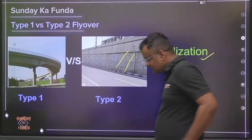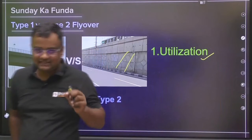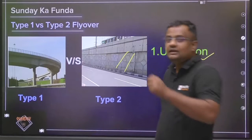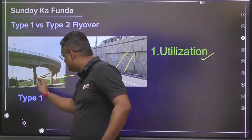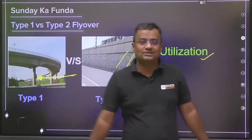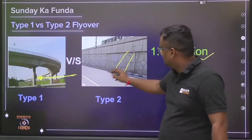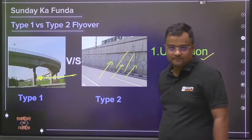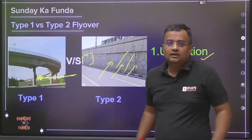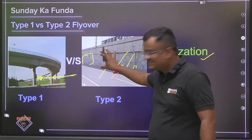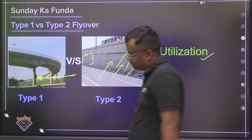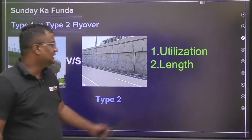The first factor is utilization. Irrespective of site conditions like soil bearing capacity, and irrespective of economy, if you want a clear passage — for example, if traffic is moving in a perpendicular direction and a road is coming perpendicular — then you have to construct type one because the road cannot pass through a soil-filled embankment. If free passage is required, you must go with type one.